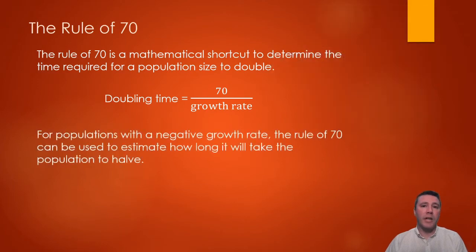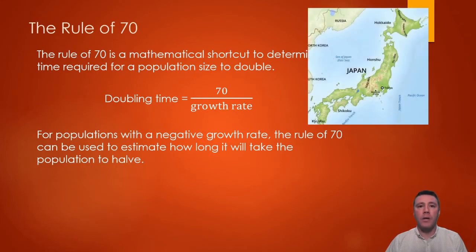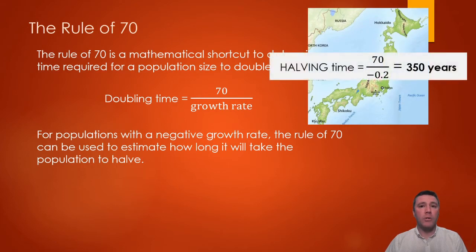For those populations that have a negative growth rate, the rule of 70 can be used to determine its halving time — how long it will take for the population to reduce by half. In Japan, the annual growth rate is negative 0.2%. So it will take about 350 years for the population of Japan to go from 126 million to 63 million.